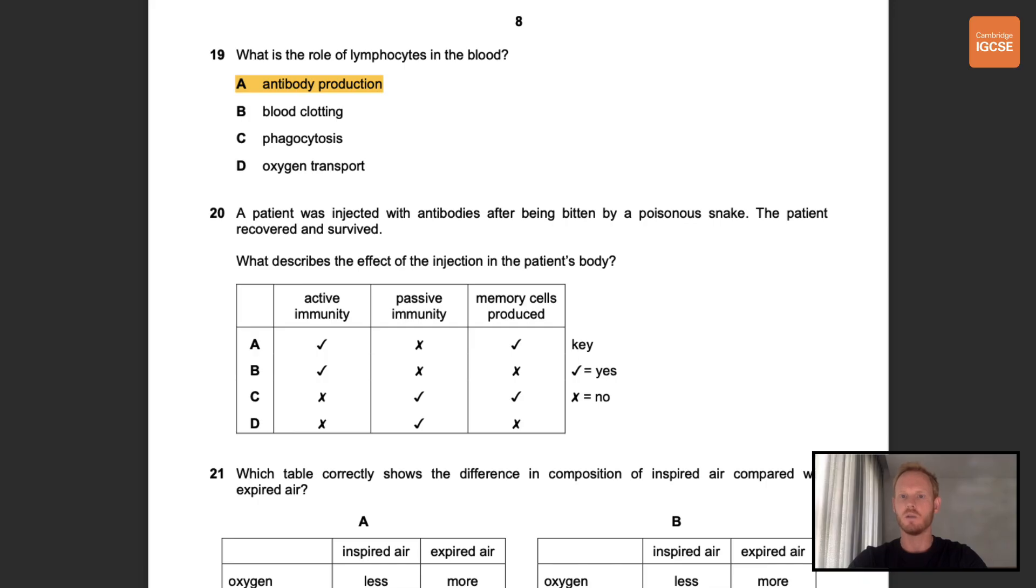Question 20. A patient was injected with antibodies after being bitten by a poisonous snake. The patient recovered and survived. What describes the effect of the injection in the patient's body? Okay, so the answer we're looking for here is passive immunity, since passive immunity involves acquiring antibodies from another individual. Active immunity, by comparison, involves antibody production in the body of the host. Memory cells are not produced in passive immunity, so the correct answer is D.